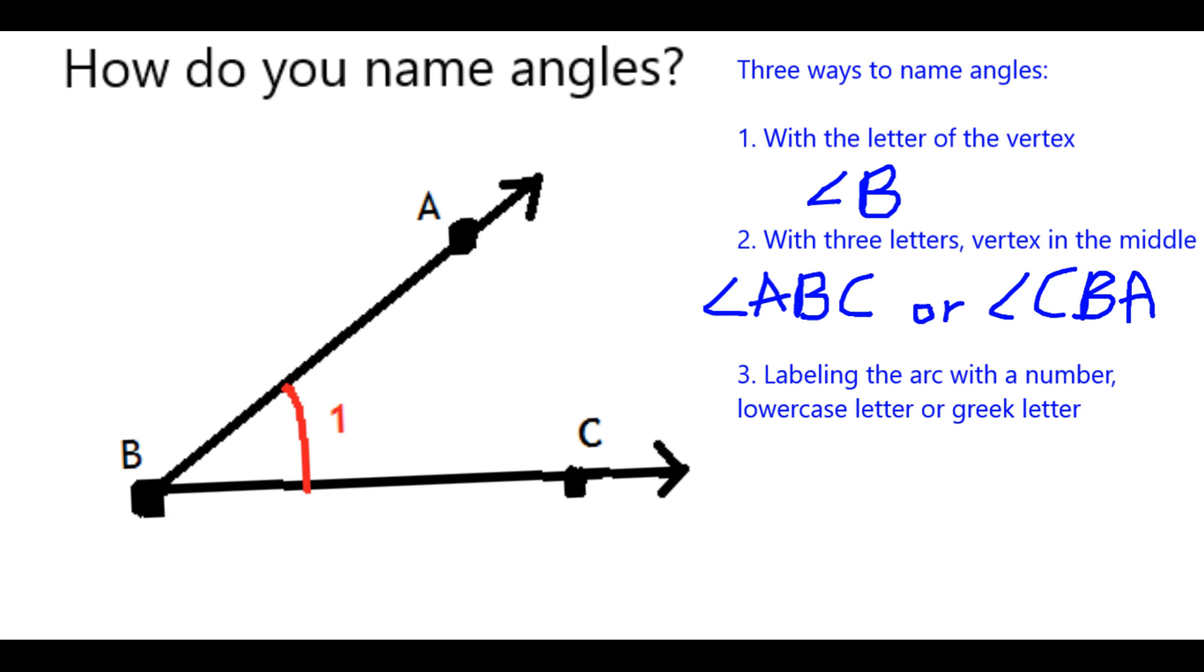Finally, you could label it based on the number or label on the arc. Sometimes it could be a Greek letter or a lowercase letter as well. But in this case, we have angle 1, we would call it, because 1 is labeled on the arc.